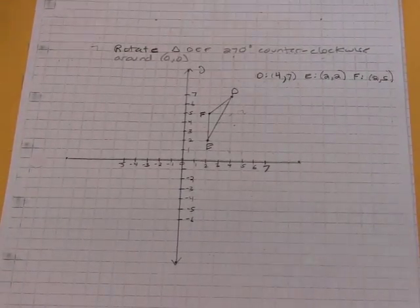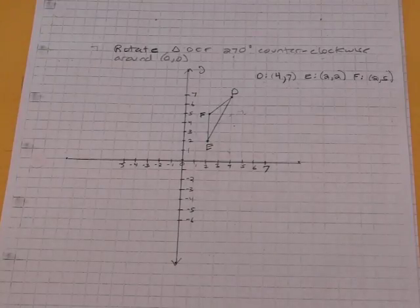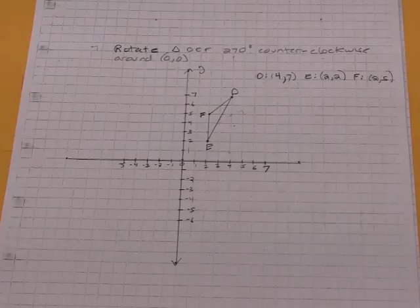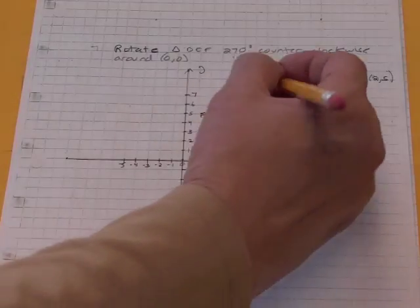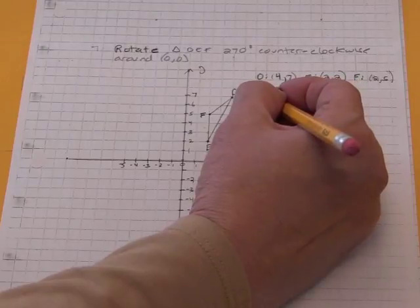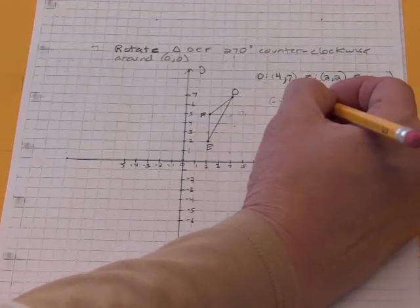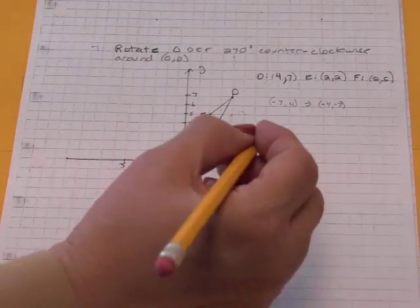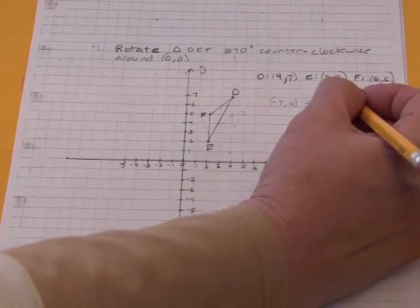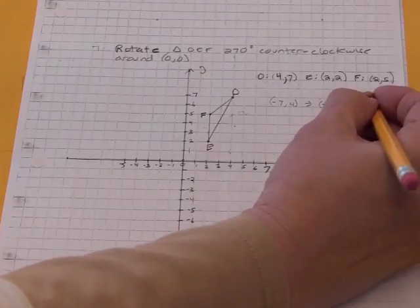The last rotation we're actually going to construct on the video is a 270 degree counterclockwise rotation. Remember, all these numbers, 180, 270, they're multiples of 90. So all you really have to remember is the 90 degrees. To go 90 degrees counterclockwise, we switch and make the X negative. To go another 90 degrees, we switch again and make the X negative. And to finally go to 270 degrees counterclockwise, we switch again and make the X negative.